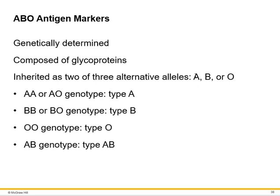This should be fairly familiar from anatomy and physiology or general biology, so I'll briefly go over this. The markers are genetically determined and composed of glycoproteins — a carbohydrate chain attached to a protein portion on the red blood cell membrane. They are inherited: you get two alleles, one from your mother and one from your father, and the alleles are A, B, and O.